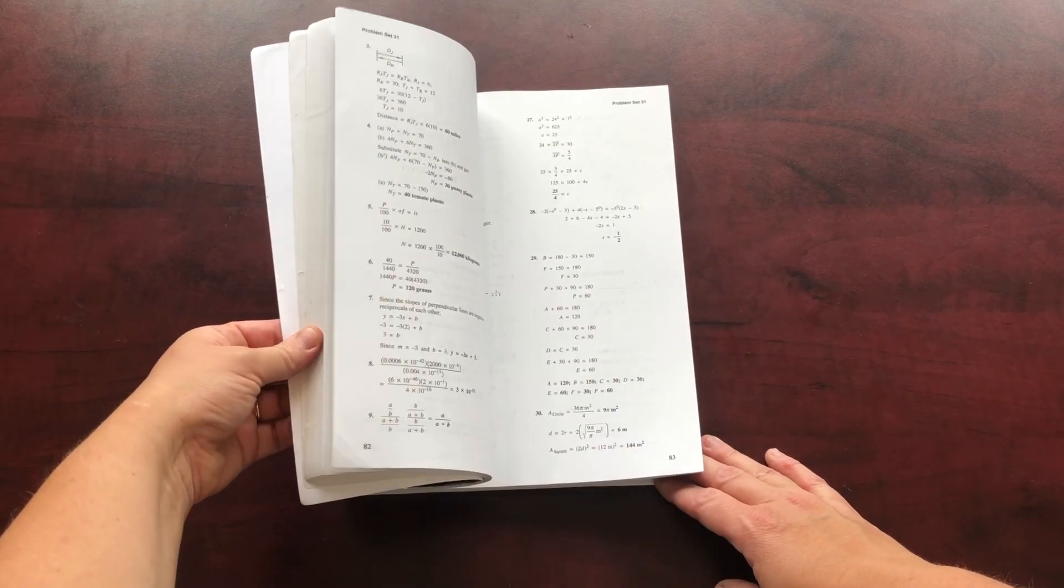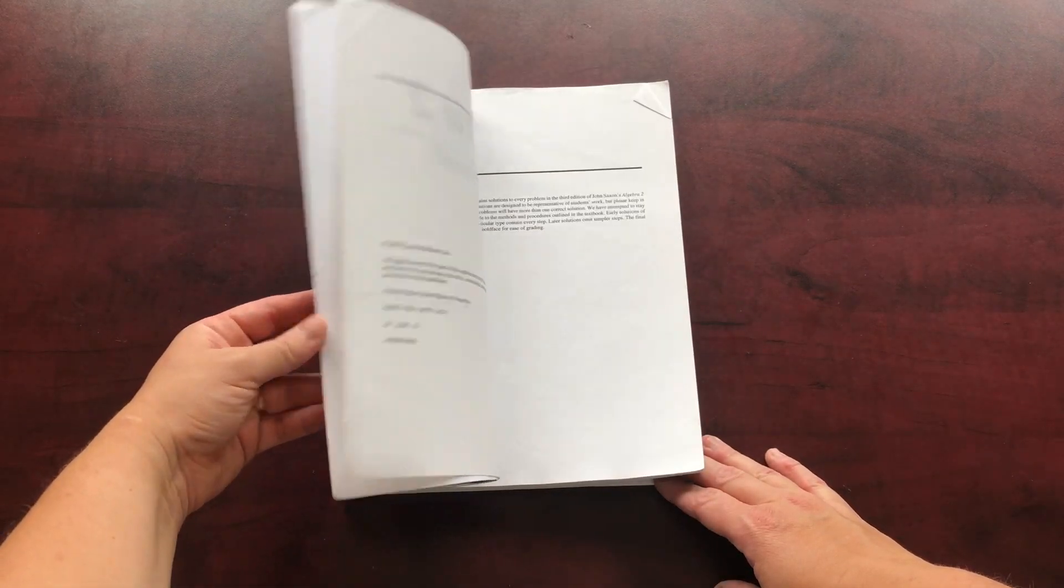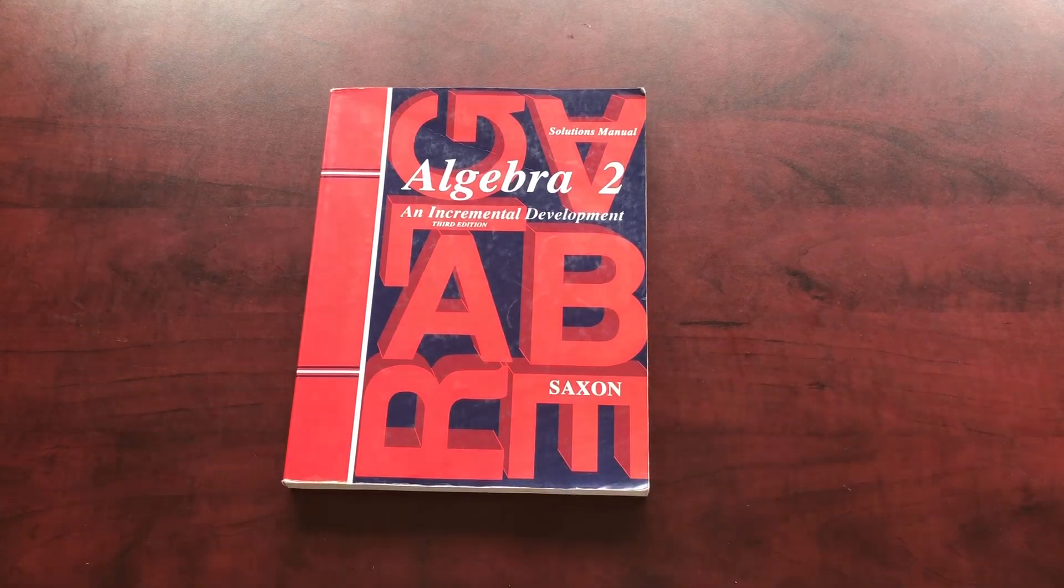So a few things I wanted to share about this. We have used Saxon math for our children from grade one all the way through. My oldest just finished the Algebra 2 at the end of grade 10. It works really well for our family. I'm able to adjust it for each child and it's just worked really well. And so that's the only math program we have used with our children.